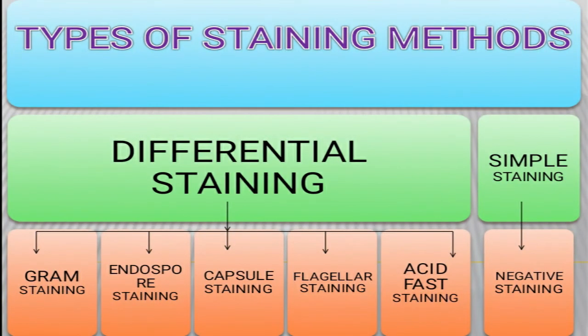The next topic is types of staining methods. There are two types of staining: simple staining and differential staining. Simple staining includes negative staining. Differential staining is further divided into gram staining, endospore staining, capsule staining, flagellar staining, and acid fast staining.